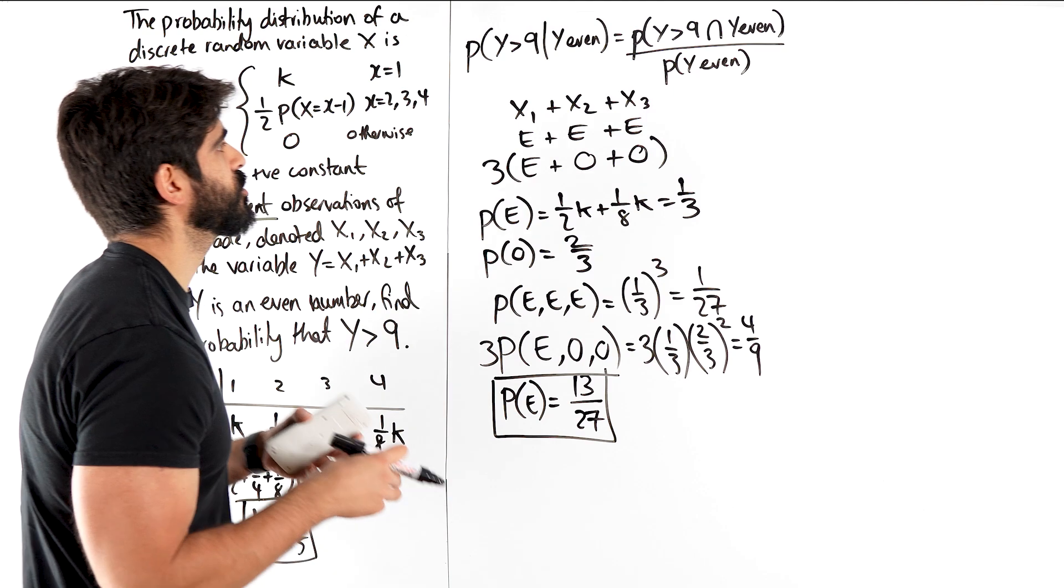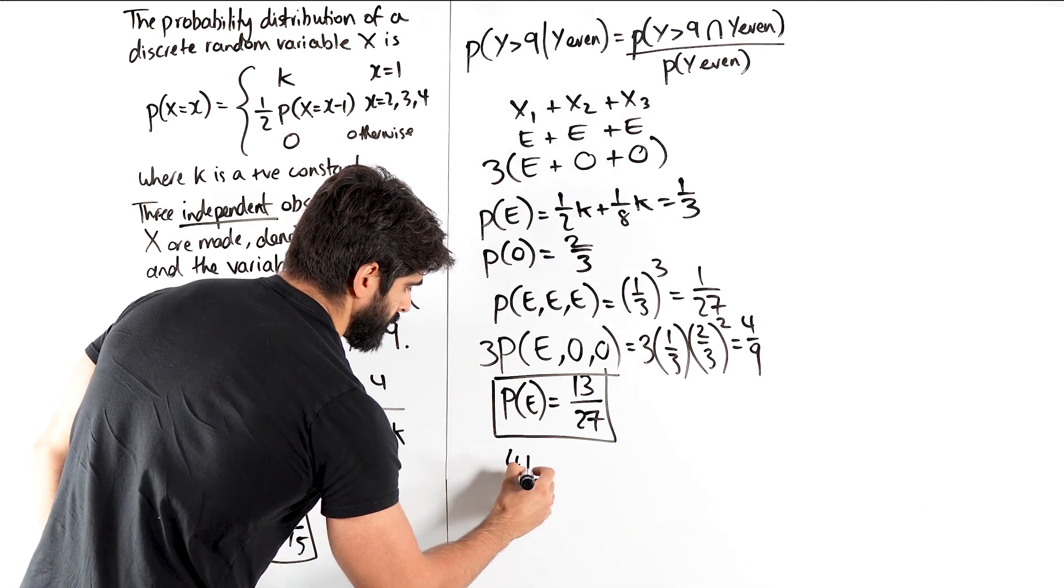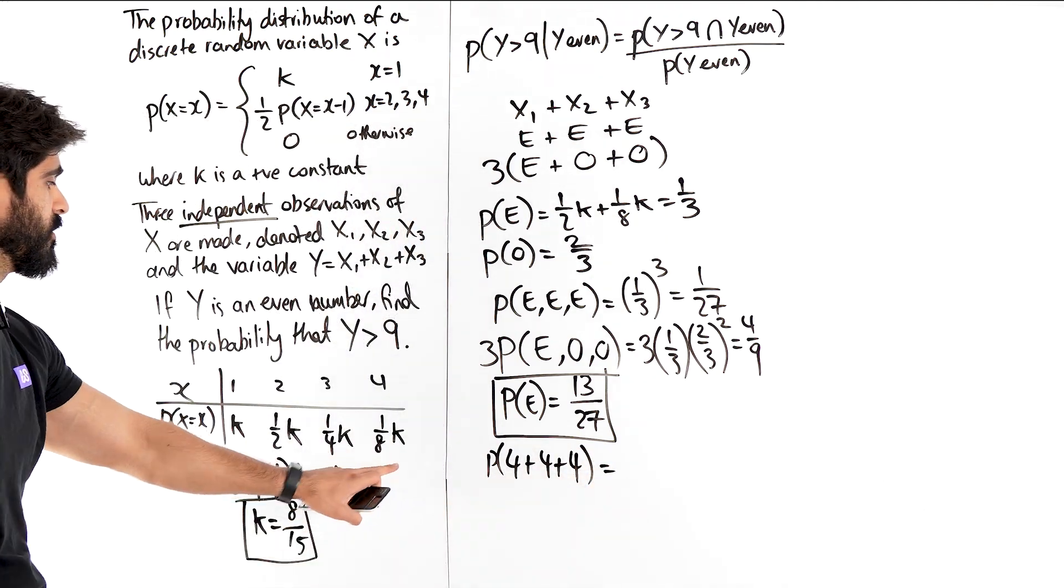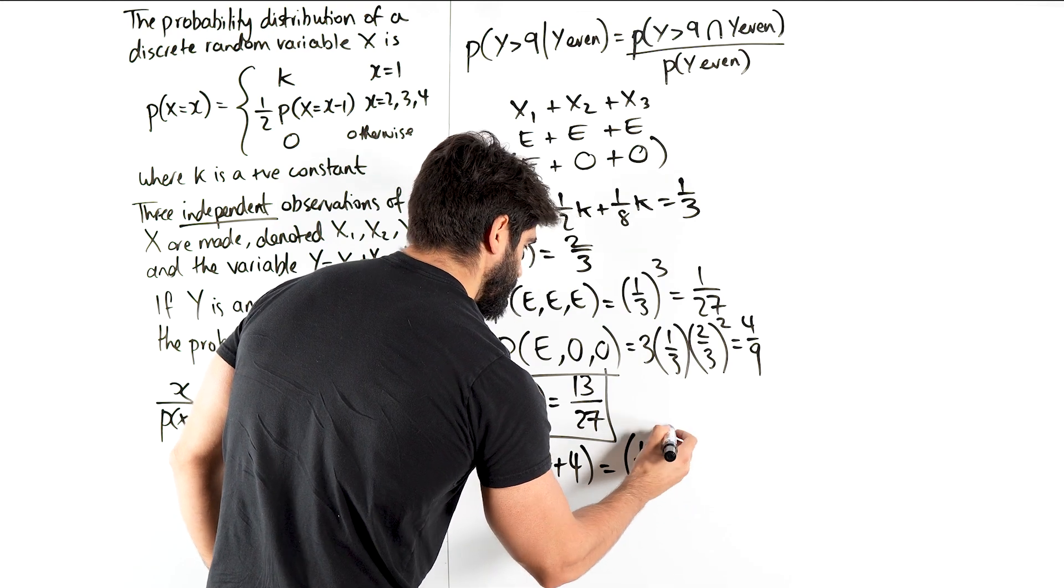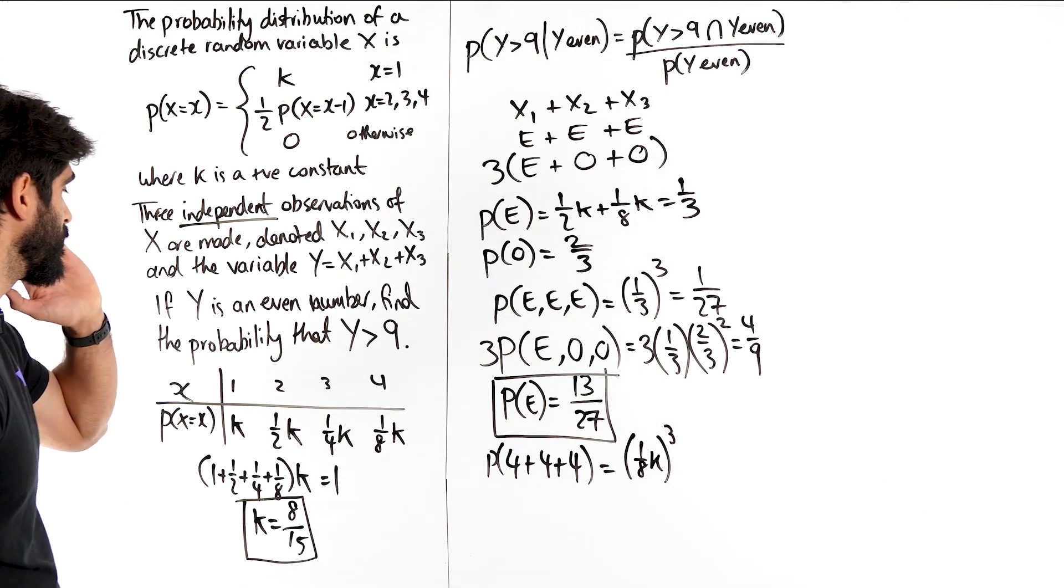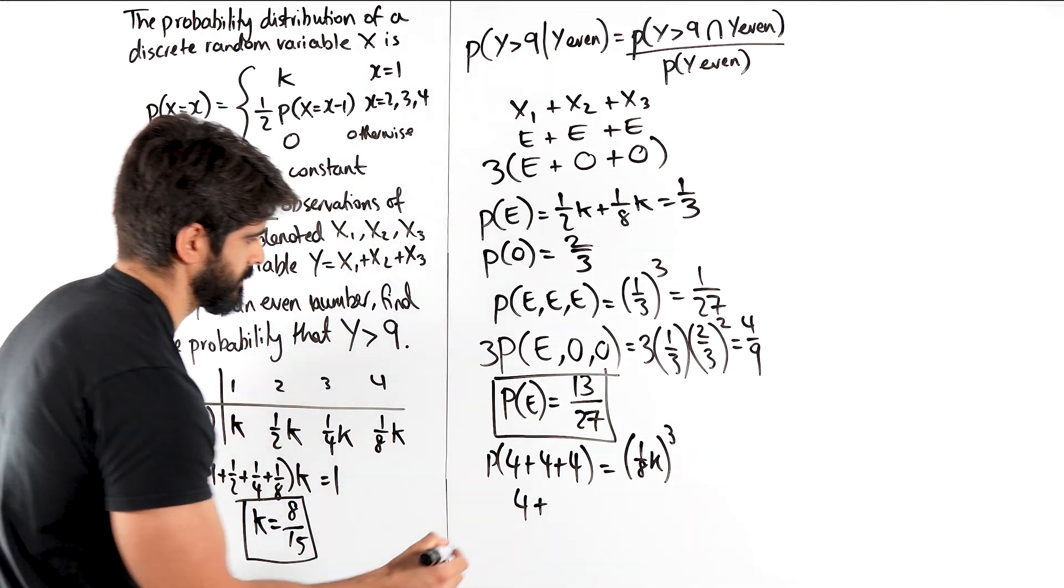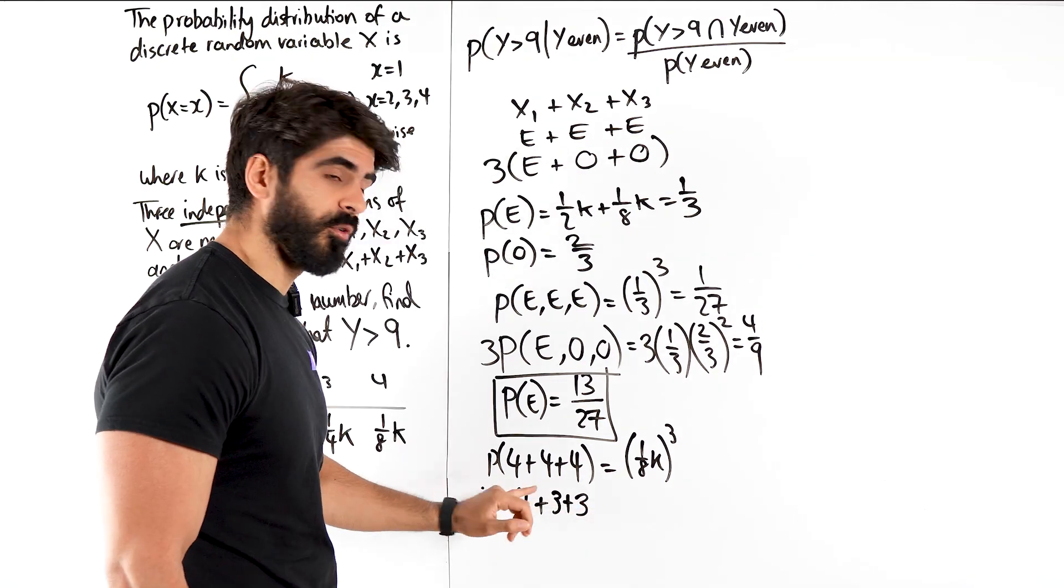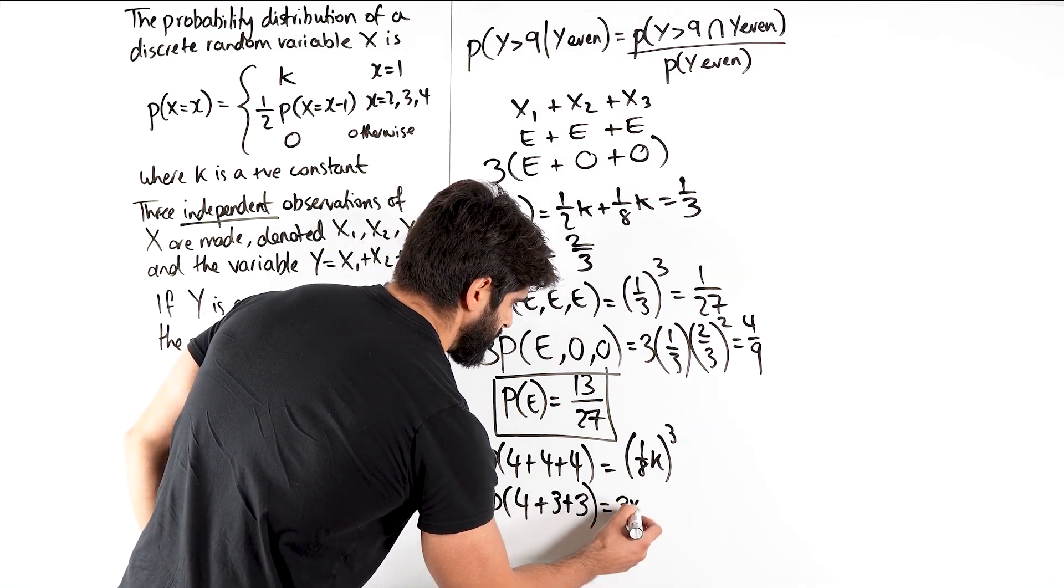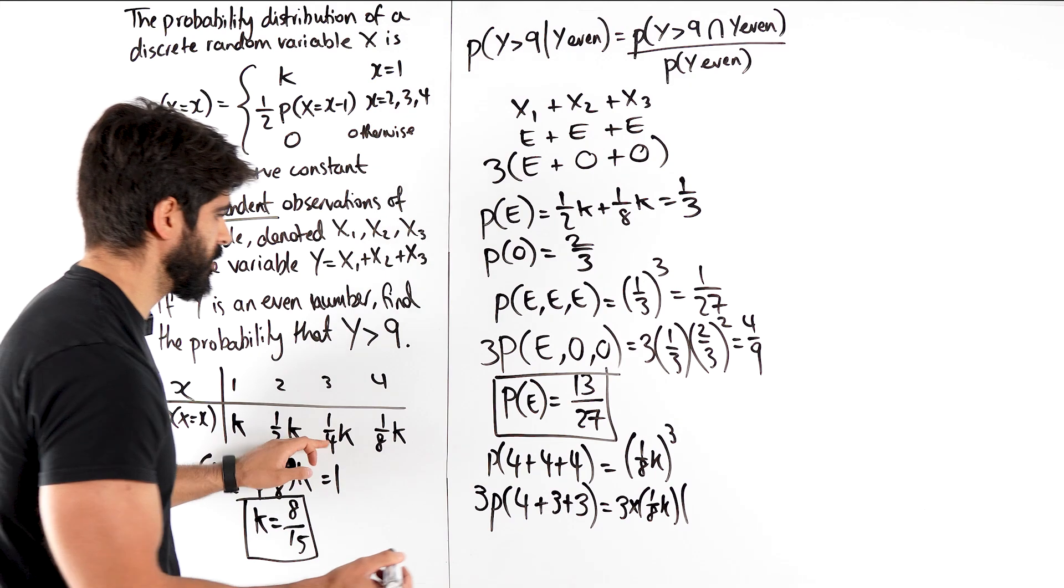Now we have to work out which one of those combinations would have given us a value bigger than 9. Well, if we stick to this principle, E, E, E, 4, 4, 4 would have. So the probability of 4 plus 4 plus 4 would have given that which is 1 over 8k cubed. What other options would have given me that? Well, there's no other evens. 2 plus 2 plus 2 wouldn't be bigger than 9. I'm going to have to look at the even odds odds. If we think about 4, what could I pair that with? I could pair that with 3 and 3. I had 4, 3, 3 and I said there was three options. So there's three ways to do this. So that's three lots of the probability of 4 which is 1 eighth k times 2 lots of 3, which is 1 quarter k squared.